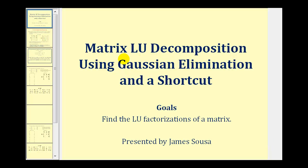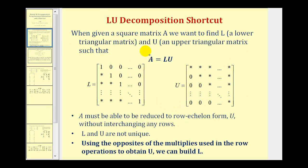Welcome back for a second lesson on matrix LU decomposition. In this video, we'll use Gaussian elimination and a shortcut to determine the LU decomposition. The goal of LU decomposition is to write a square matrix A as the product of matrix L and matrix U, where matrix L is a lower triangular matrix and matrix U is an upper triangular matrix.